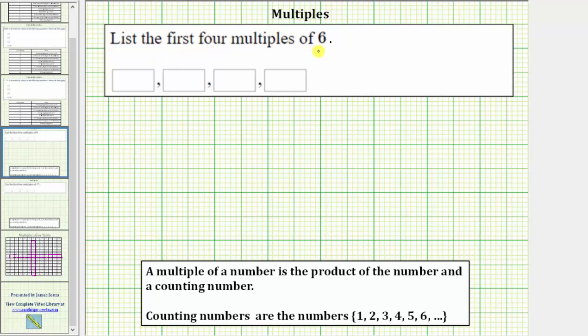We're asked to list the first four multiples of six. A multiple of a number is the product of the number and a counting number.